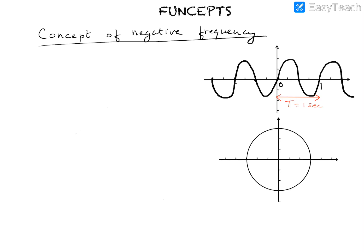To understand this, let us look at the figure on the top of the screen, where we have a sinusoidal waveform whose time period is given to be one second. That means it completes one cycle in one second. The frequency, which is the inverse of the time period, is therefore one upon one, which is equal to one hertz. One hertz corresponds in radians to two pi radians per second.